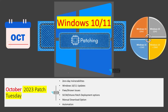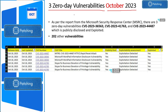Let's talk about October patches in detail. We are going to check the zero-day vulnerabilities released on 10th of October, Patch Tuesday. And then we will talk about Windows 10 and Windows 11 latest cumulative updates, new features, updates and fixes, known issues, how to deploy the patches using Intune or SCCM, how to download the patches manually, and the automation options with Patch Tuesday.